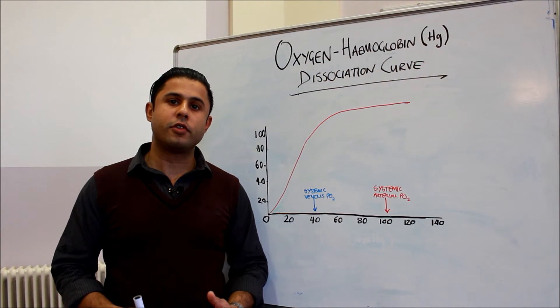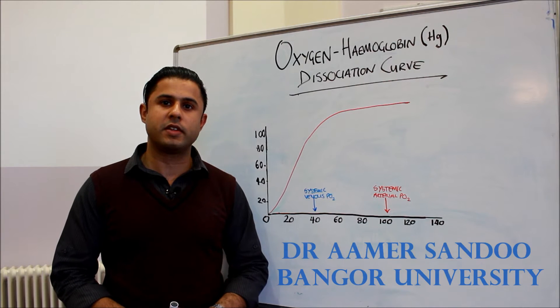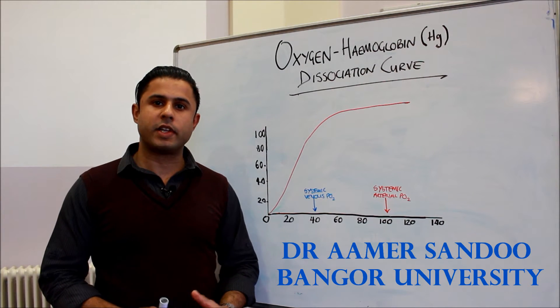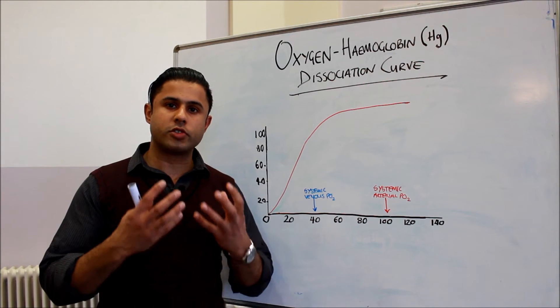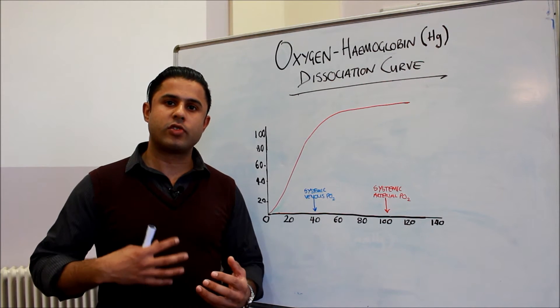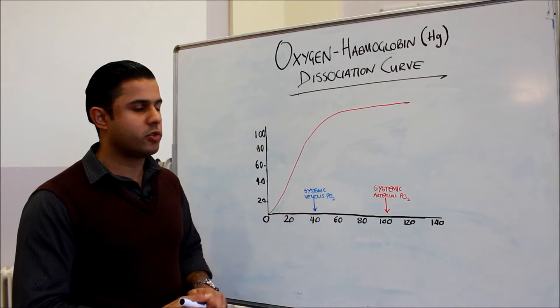Hello everyone and welcome to another edition of the human physiology video tutorials with me, Dr Amir Sandhu. Today we're going to talk about the oxygen hemoglobin dissociation curve and discuss how oxygen breathed in from the lungs is transported to our tissues where it's actually needed. So let's get straight into it.